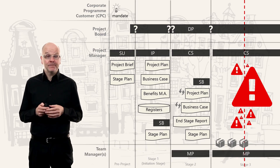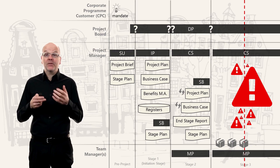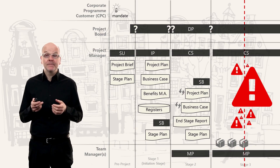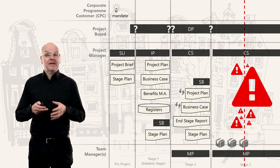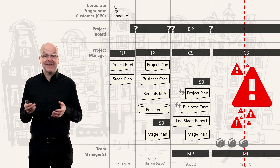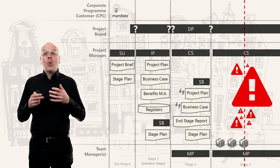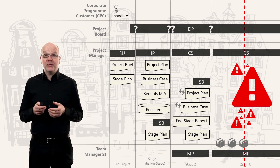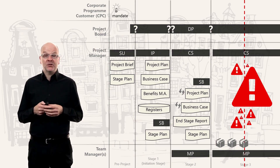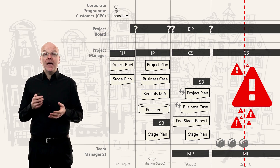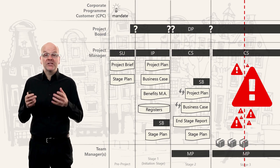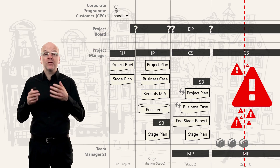So what should the project manager do — panic, find someone to blame, hide it, or pretend to get it signed off? No, all of these are wrong. So what does PRINCE2 offer to help deal with these situations? PRINCE2 uses something called tolerances.